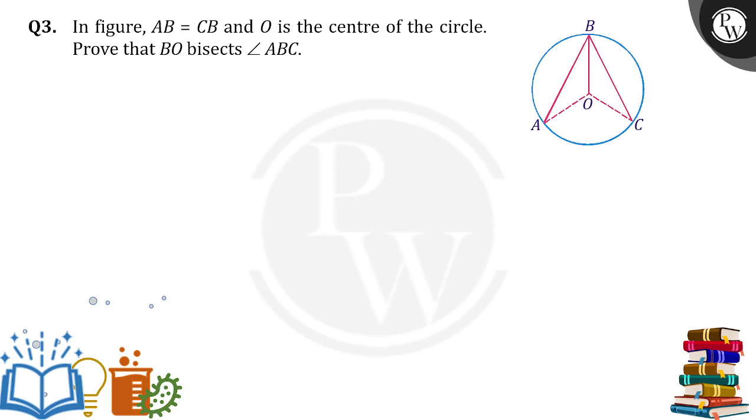So how can we prove that? If you observe carefully, O is the center of the circle. When O is the center of the circle, OA is the radius, OC is the radius, they both are equal.